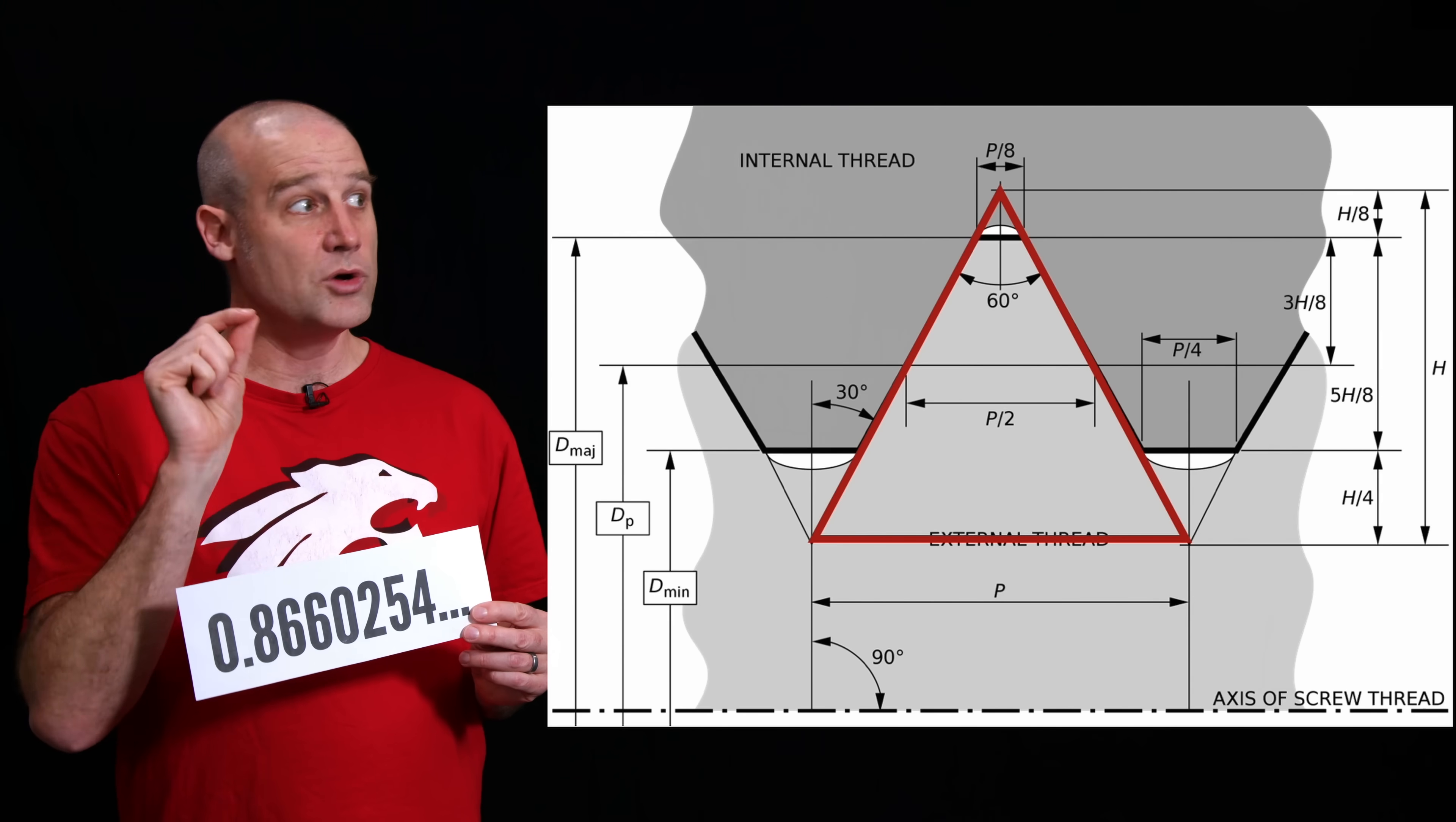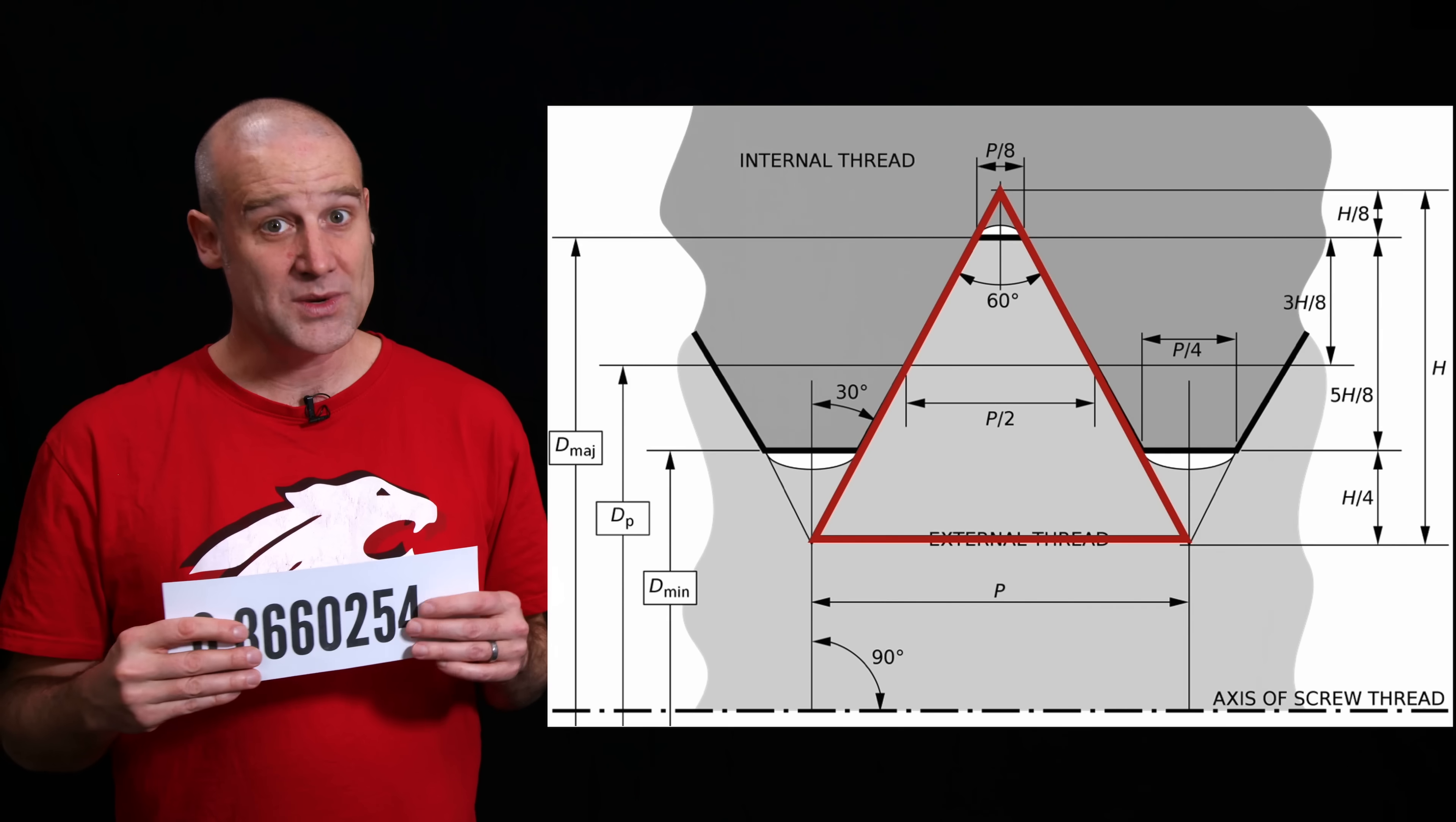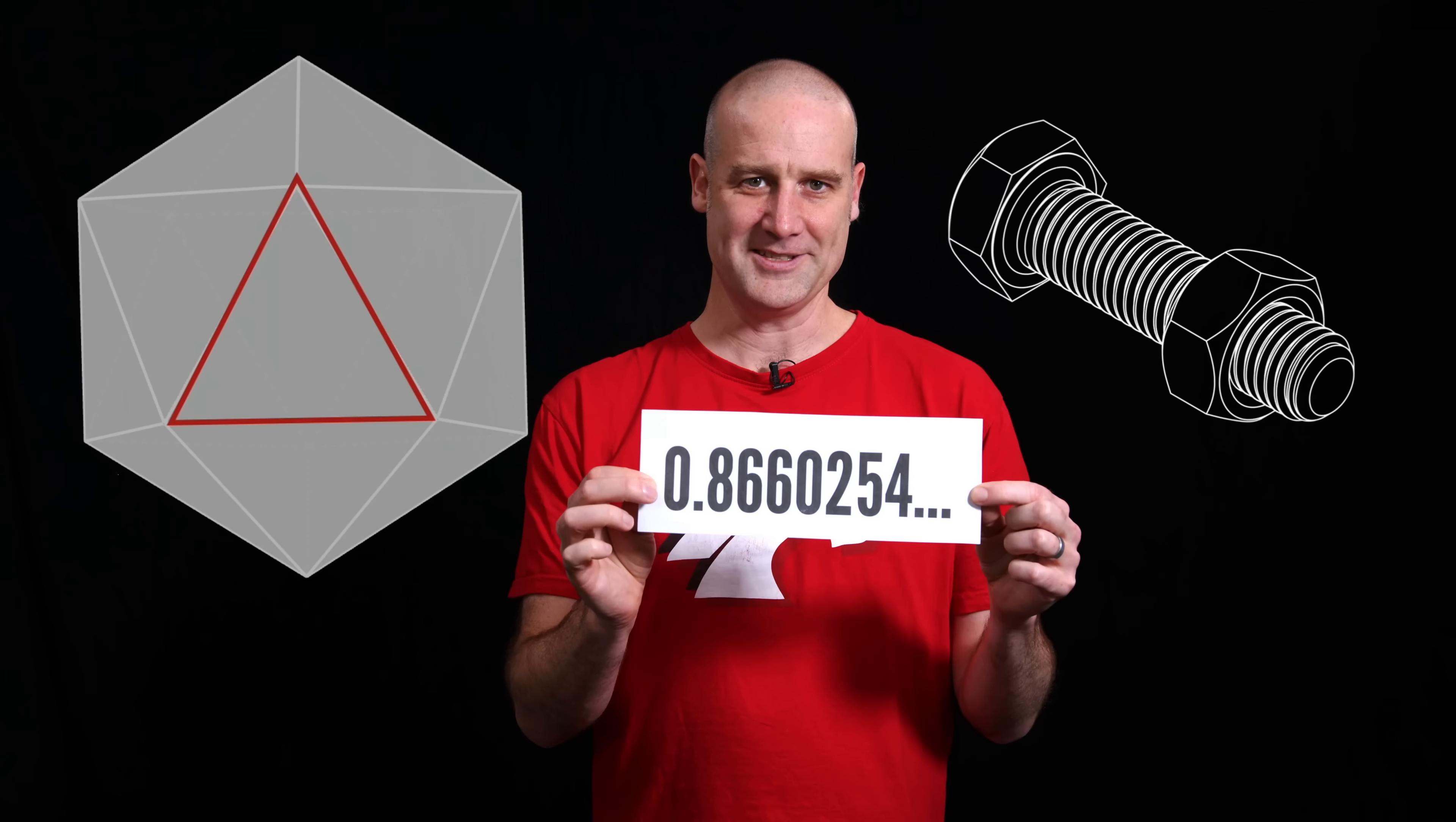Now technically, we don't use the entire triangle in the thread. We take a little bit off the top, take a bit off the bottom, it's actually only 5/8 of that triangle, but the ratio is root 3 on 2. And that's why this works, because we have the same equilateral triangle in the thread of a bolt, as on the faces of our icosahedron, we get exactly the same number in both cases.